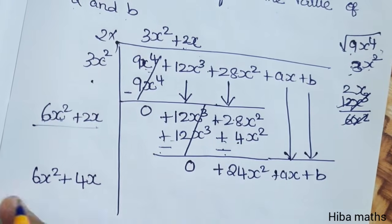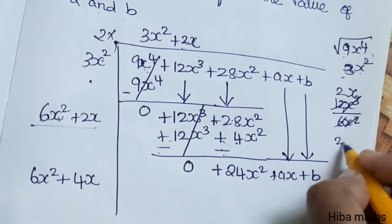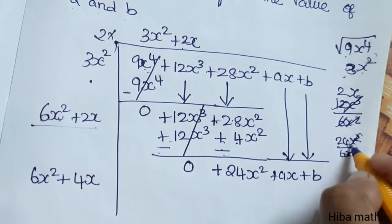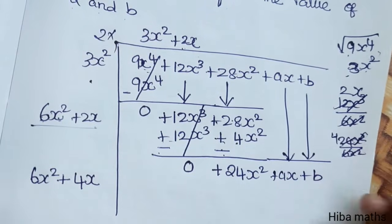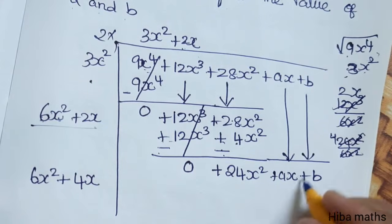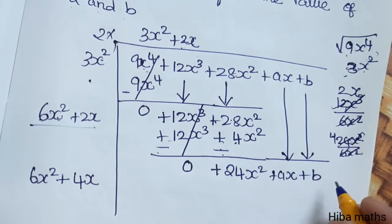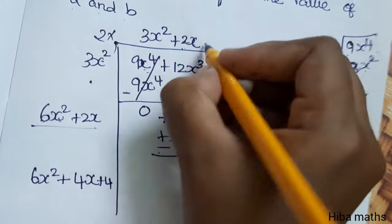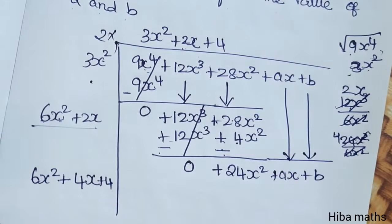Now the first term: 24x² divide by 6x². x² x² cancel. 24 divided by 6 is 4. This is the last term. So we can use this method. First divide, plus 4.